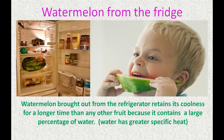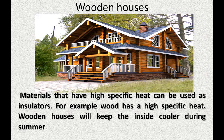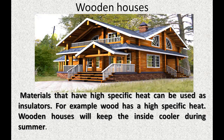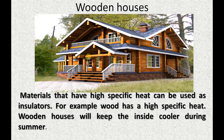Watermelon brought out from the refrigerator retains its coolness for a longer time than other fruits, because it contains a large percentage of water, which has high specific heat. Wooden houses: materials that have high specific heat can be used as insulators. Wood has high specific heat, so wooden houses keep the inside cooler during summer. People living near the equator should construct their houses with wood, because wood heats up slowly due to its higher specific heat.